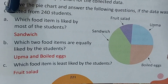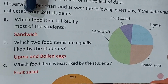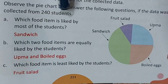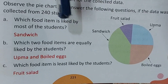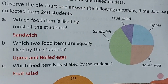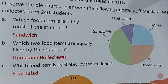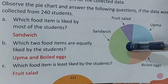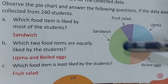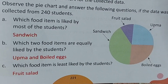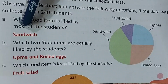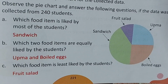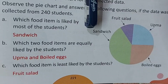First question: which food item is liked by most of the students? Look at the pie chart — which region is bigger? Sandwich. So most of the children like sandwich, and sandwich is the answer.